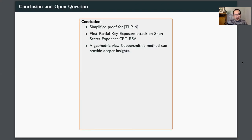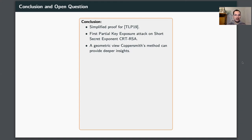To conclude: we gave a simplified proof for TLP19 with more intuition than the original, and used this intuition to obtain the first partial key exposure attack on short secret exponent CRT-RSA. The key takeaway is that approaching Coppersmith's method with a geometric view can provide deeper insights and lead to stronger results.